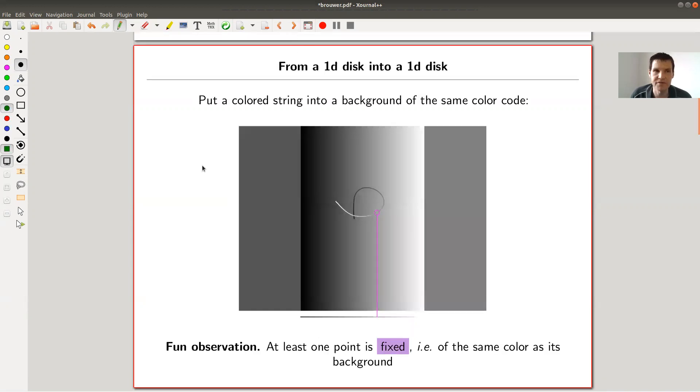And Brouwer's fixed point theorem is just the vast generalization of exactly that. You will see it. So let me start off with a really cute example. So I'm taking a 1D disk, which is just the interval a, b, whatever, minus one, one, whatever you want, into a 1D disk.